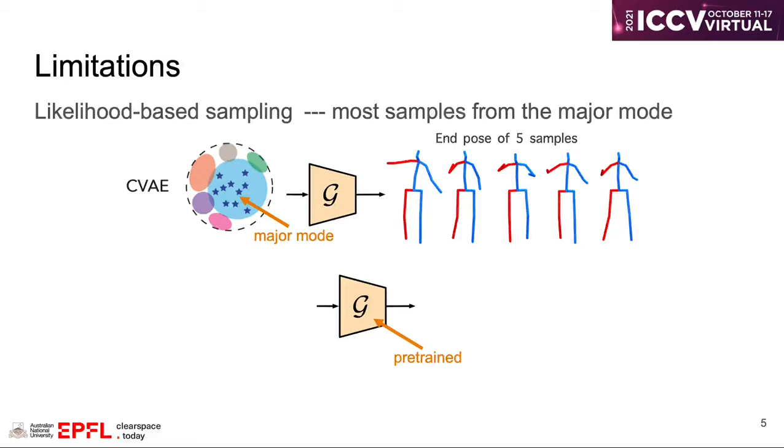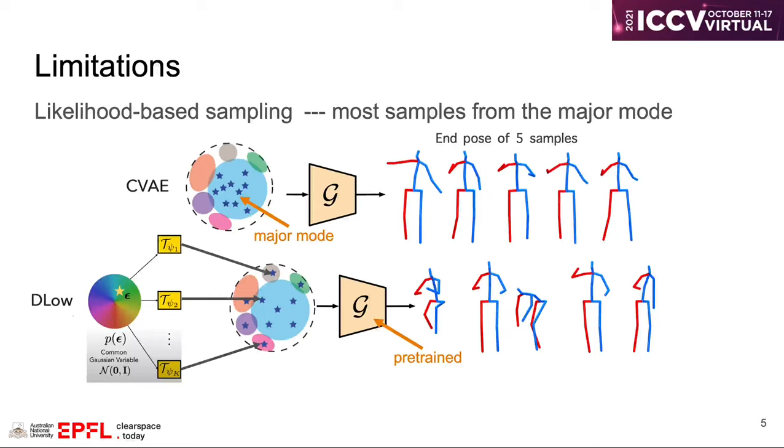Given a pre-trained generator, one solution is to learn a better way of sampling. For example, in DLO, a fixed number of mappings are learned which aims to map one random variable to different modes of the motion distribution.